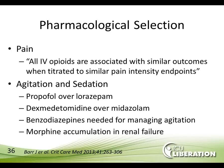Regarding pharmacological selection — a hot topic with limited time to cover fully: all IV opioids are associated with similar outcomes when titrated to similar pain-intensity endpoints. From the sedation and analgesic guidelines, preferred agents include: propofol over lorazepam due to shorter half-life and fewer active metabolites; dexmedetomidine over midazolam for its sedative and potential analgesic effects; benzodiazepines when needed for agitation. Morphine accumulation in renal failure is a concern. Drug shortages for propofol and midazolam have required modification of dosing protocols despite established guidelines.